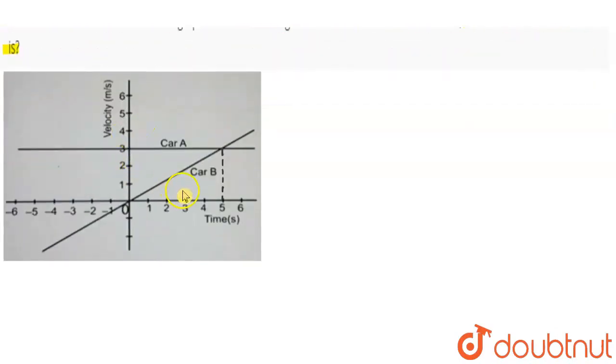So here we have a VT graph for two cars, A and B. Car A has constant velocity, which is V equals 3 meters per second. In the graph, we have meters per second. So here we have constant velocity. Car A has 3 meters per second velocity from the initial instant of time, T equals 0.